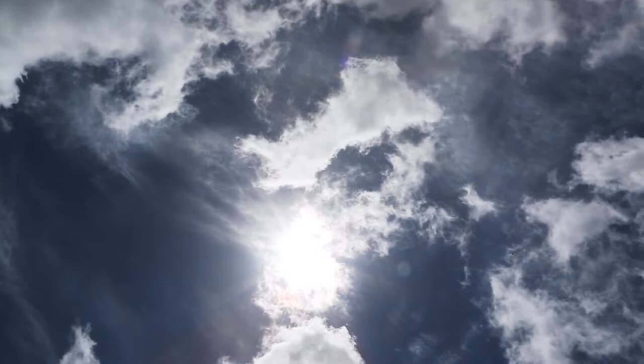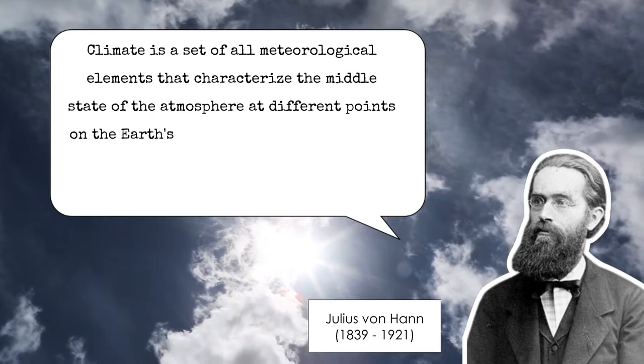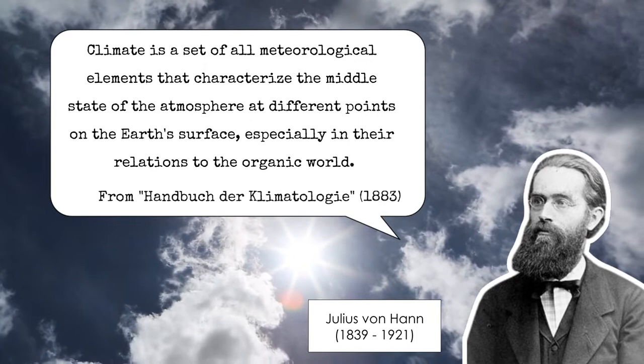According to ocean meteorologist Julius von Hahn, climate is said of all meteorological elements that characterize the middle state of the atmosphere at different points on the Earth's surface, especially in their relations to the organic world. Basically, it can be considered as a statistical average weather profile over a long period of time.